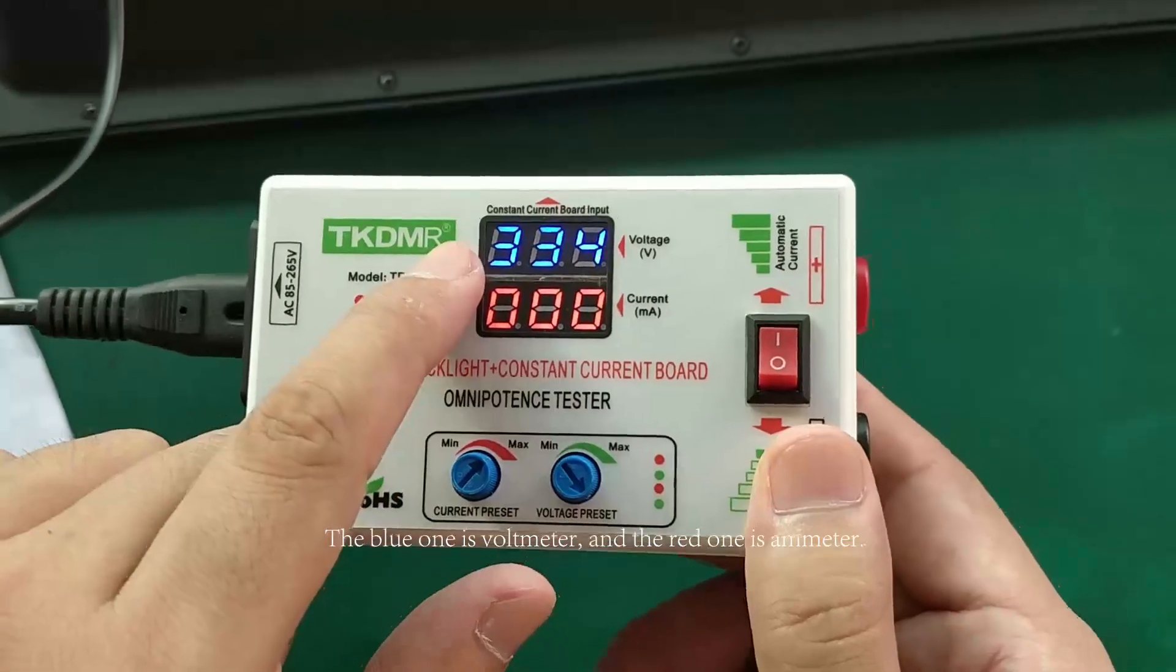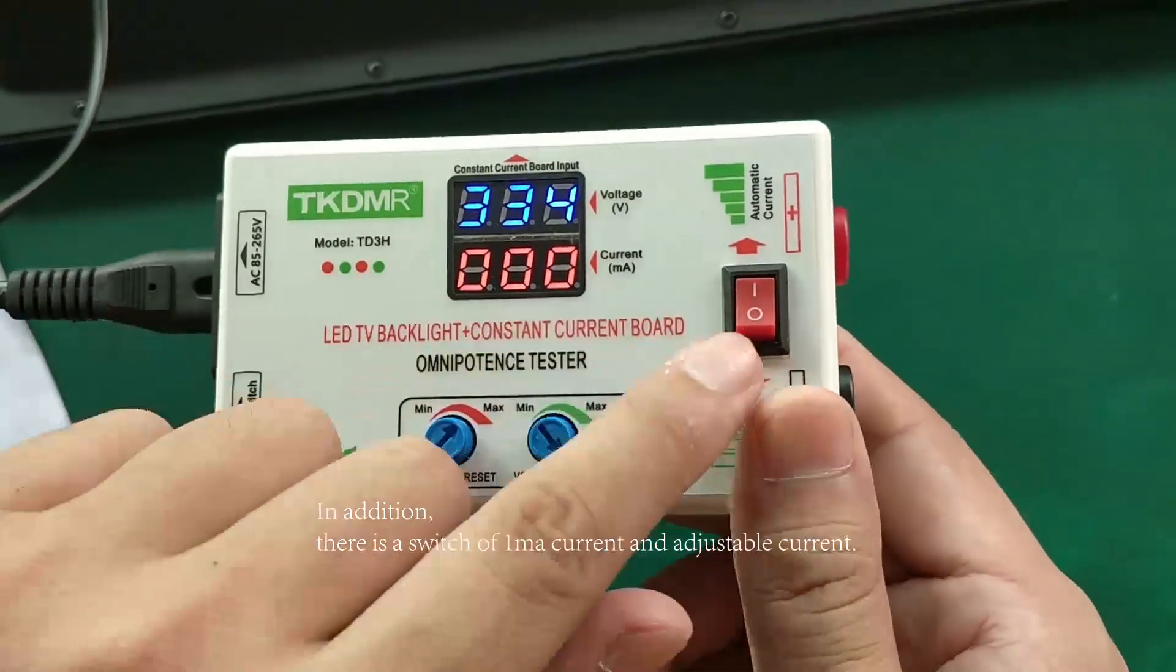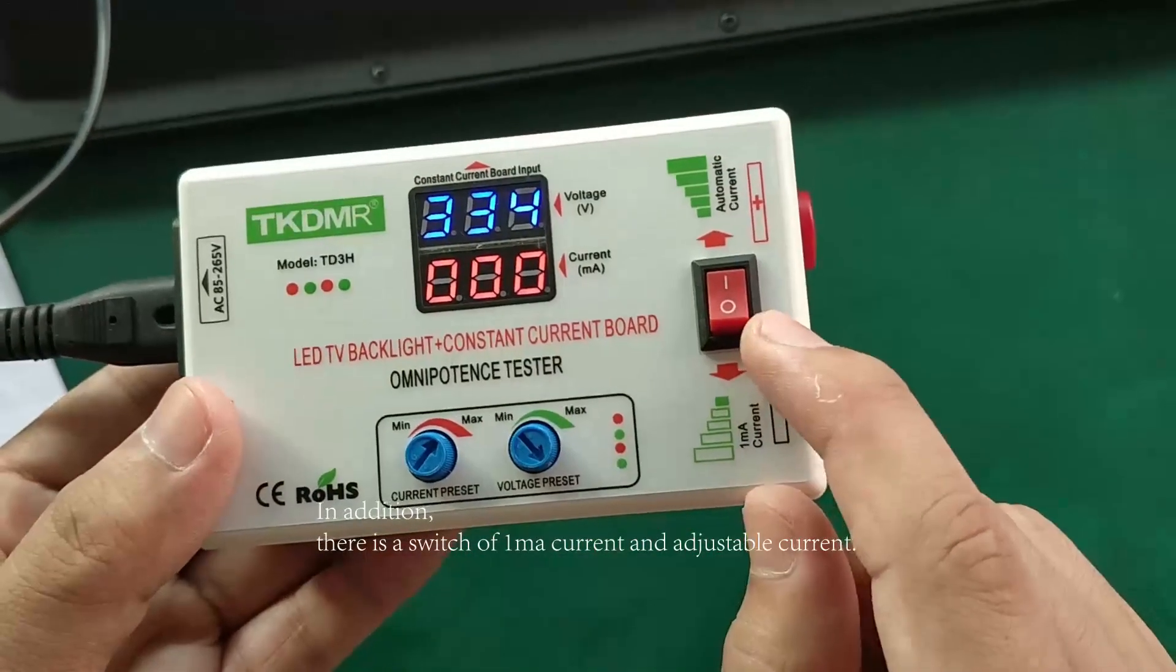The blue one is voltmeter and the red one is ammeter. In addition, there's a switch of 1 mA current and adjustable current.